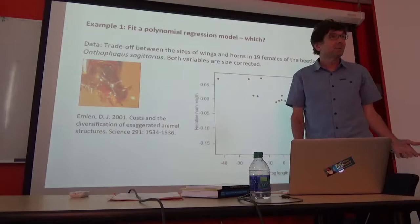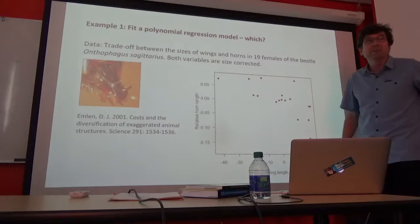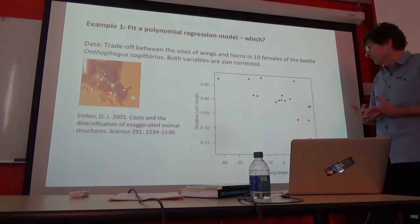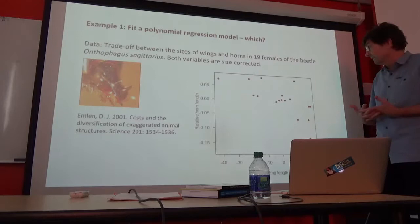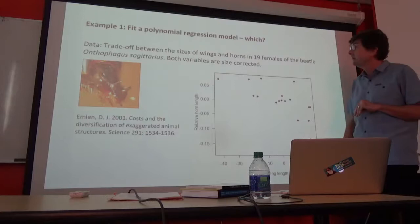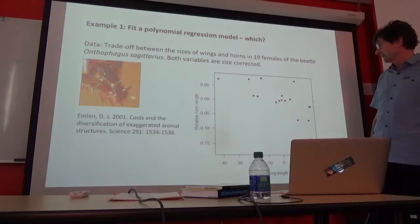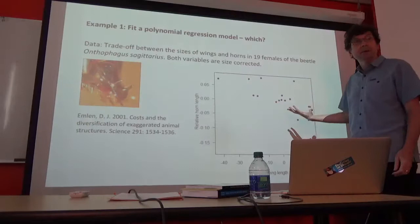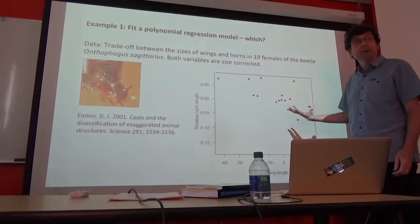I thought I would start with a really simple, almost trivial example. Every time you carry out a regression, you really face the question: how do I know what regression model to fit? I could fit a straight line, or the data look a little bit curvilinear — I could fit a quadratic. How do you decide these things? Here's a dataset, and I would apply this problem to a very simple data set: how to decide how complicated a model to fit to a simple scatter plot.